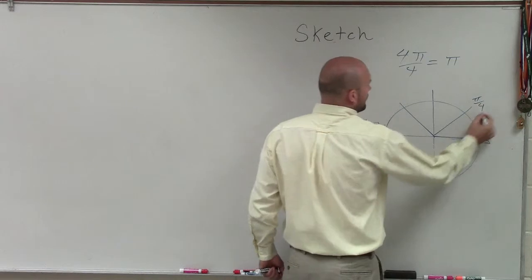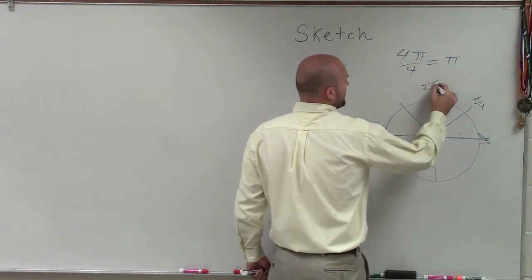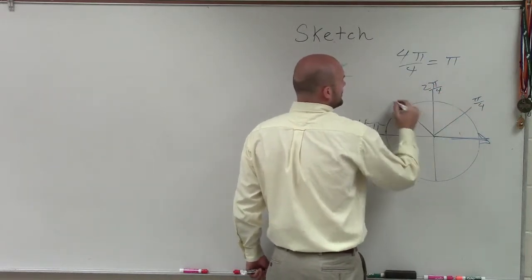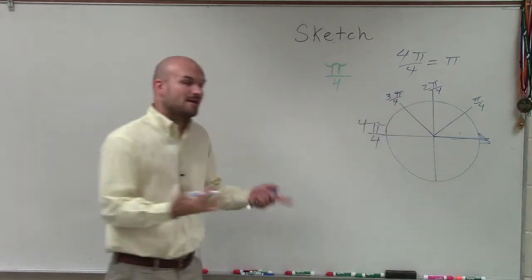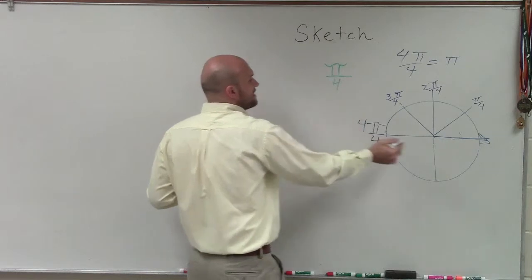Meaning this would be pi over 4, this would be 2 pi over 4, and this would be 3 pi over 4. And it represents the same thing. So that allows me to be able to understand that.